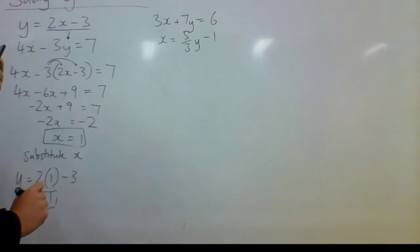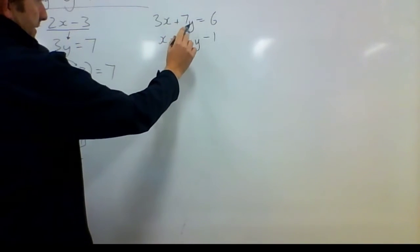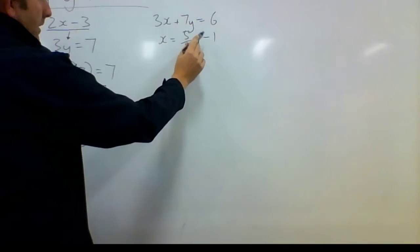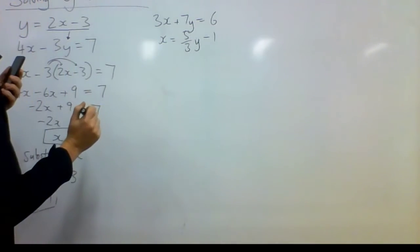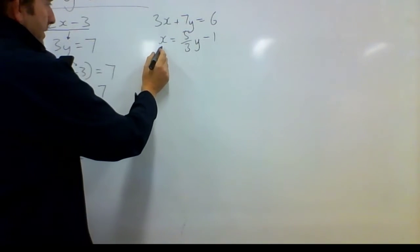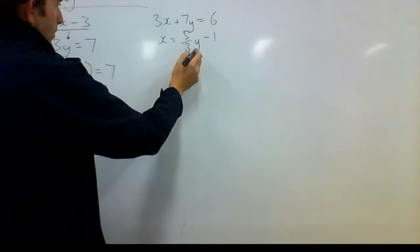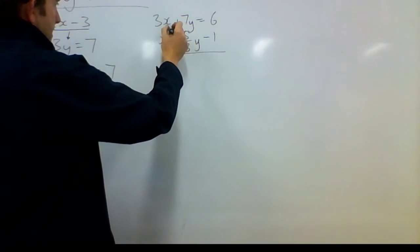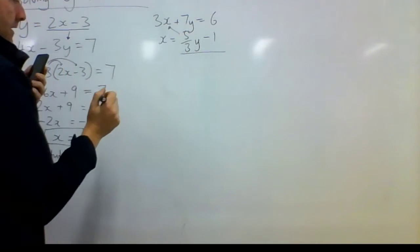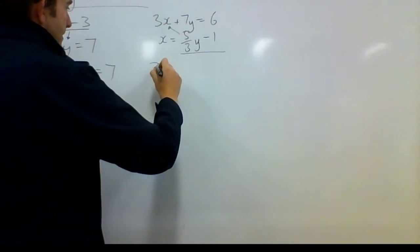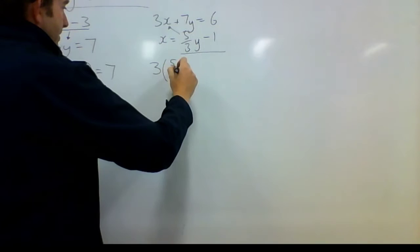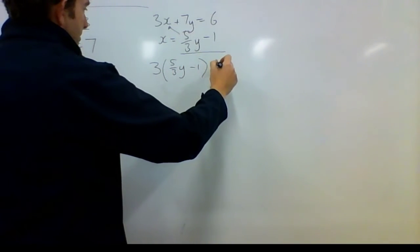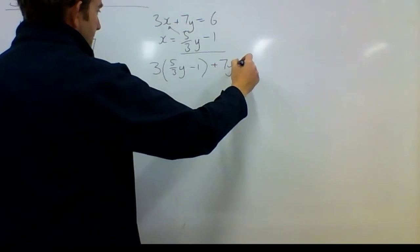I'll do another example here. 3x plus 7y equals 6. x equals 5 thirds y take 1. In this case, I've got x by itself here being equal to 5 thirds y take 1. So I'm going to substitute all of that there into that up here. So on the next line here, I'll say 3 times 5 over 3y take 1 plus 7y equals 6.